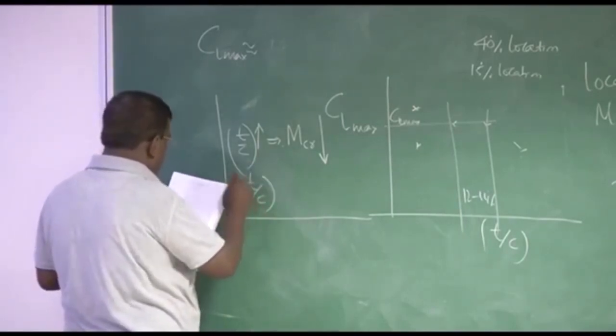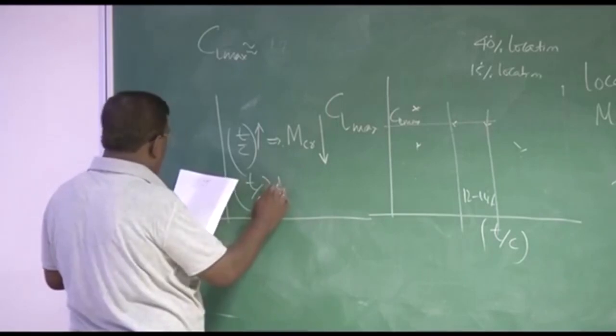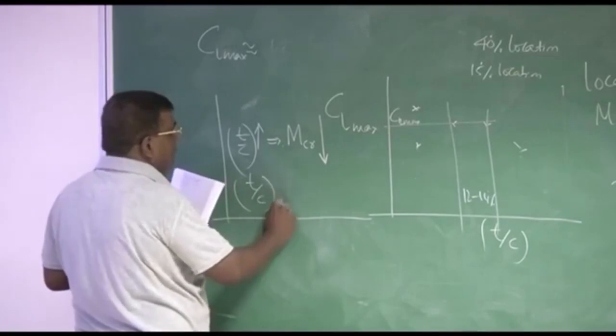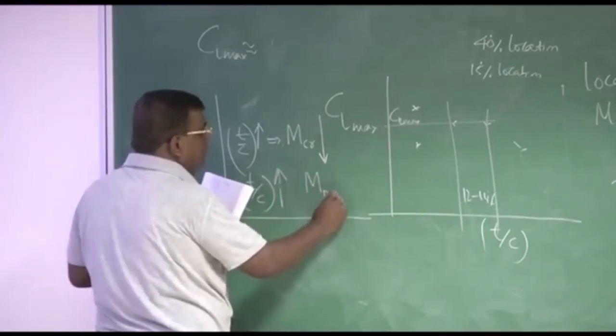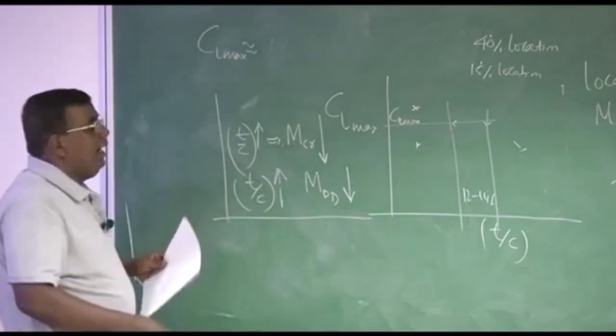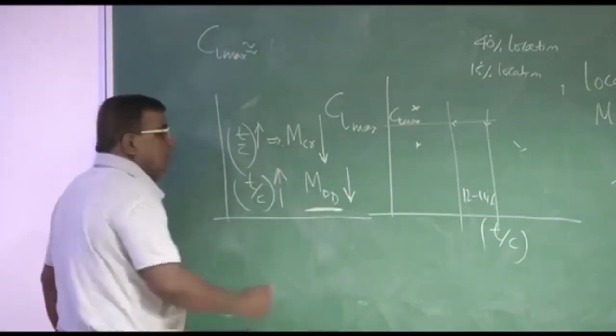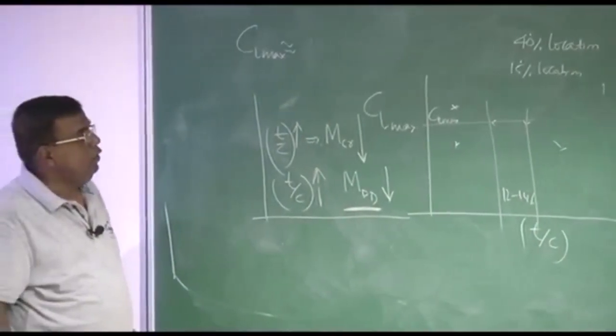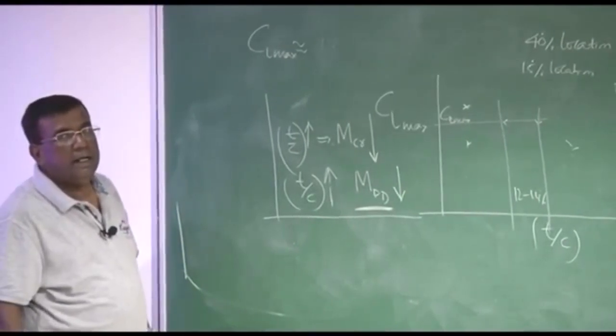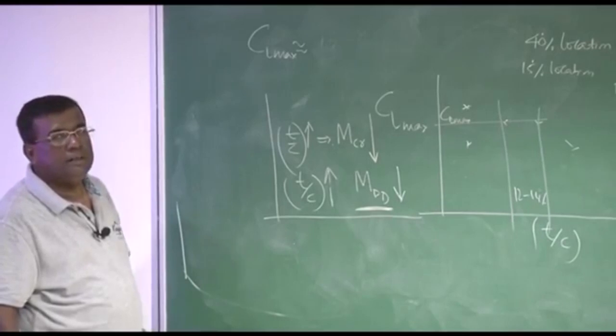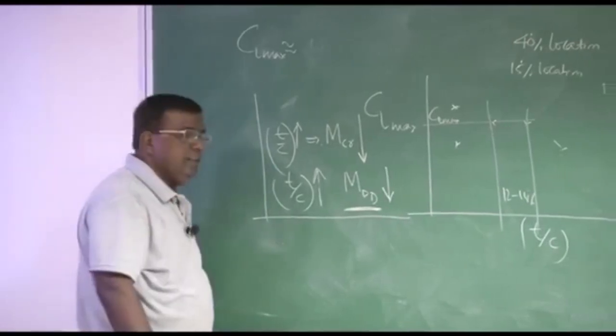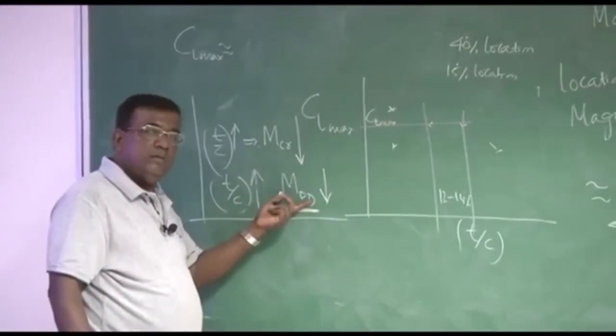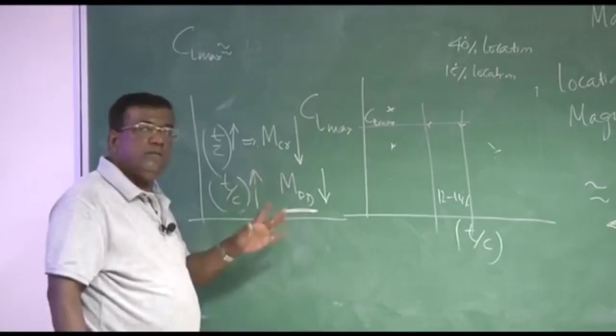And also T by C as it goes up, drag divergence Mach number goes down. Now this is for high speed, this draws maximum sweat from the designer. Because you know that yesterday we defined drag divergence Mach number, the sharp rise in the CD. So whatever T by C advantage you may be getting, but if it does not give us satisfaction on drag divergence Mach number for high subsonic airplane, we say thank you very much, I will find some other way.